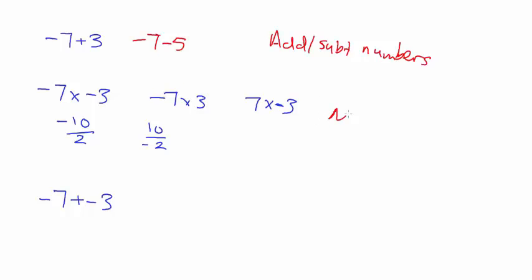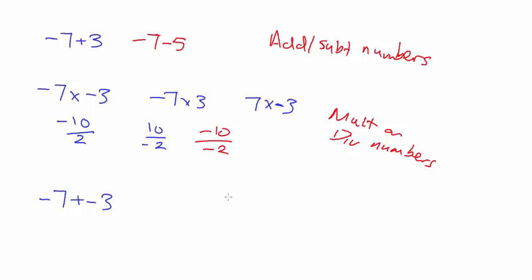The second is multiplying or dividing numbers where one or both are negative. And the third is knowing what to do when two signs are next to each other.